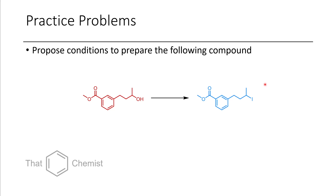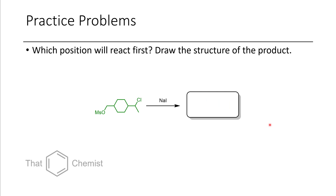Finally, I'm going to assign two practice problems. The first is to propose conditions to prepare the following compound — based on what we just talked about, see if you can suggest conditions that would afford the final product from the starting material. The additional problem is to determine which of these two positions reacts first. If you're not sure what OMs is, that's a mesylate group — a methanesulfonyl group connected to an oxygen. You just need to predict whether the chloride or the mesylate will react first and draw the structure of the product. Hopefully this has been a helpful video for discussing leaving groups. If you have any questions, comments, or suggestions, please leave them below. I hope you have an excellent day.